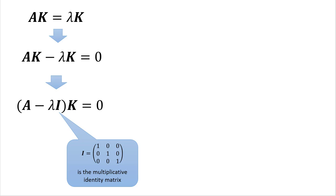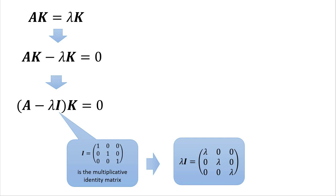We need the identity matrix because we cannot subtract a number lambda directly from matrix A — we can subtract matrices, but not a matrix and a number. So we multiply lambda by an identity matrix, which acts like the multiplicative identity of 1 for real numbers. Multiplying a number by 1 doesn't change it, so we haven't really changed the equality — we just wrote it in a form that allows us to perform the subtraction. Lambda times the identity matrix is a matrix that has lambdas on the main diagonal and zeros everywhere else.